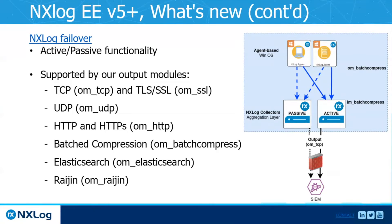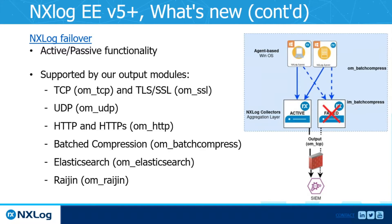Another interesting feature is NXLog failover, which gives endpoints or agents installed on centralized hosts the ability to perform active and passive failover towards multiple destinations. Instead of having one collector as your destination, you can add two or more. The endpoint contacts the first one in the list; if it's alive, logs are forwarded to it. If it dies, the agent tries the second one, and the switch happens seamlessly to minimize data loss. Modules supported with failover include TCP and TLS, UDP, the HTTP modules, Batch Compress, Elasticsearch, and Ryogen Output modules.